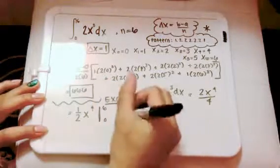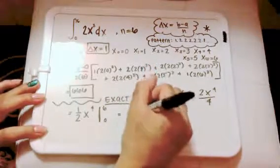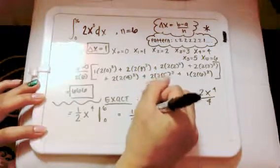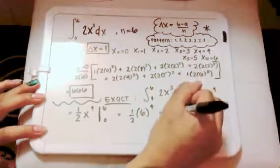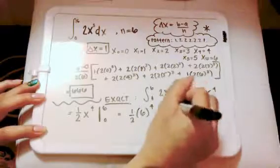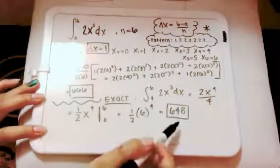and that 0 would give us nothing, so we're left with 1 half times 6 to the 4th, and that would calculate to 648. So there is our estimate versus our exact.